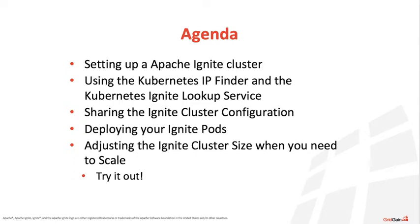Sharing the configuration is necessary in order for Kubernetes and Ignite to understand each other. Then we'll get into the fun stuff of actually deploying the Ignite pods — which are now technically Ignite pods in Kubernetes lingo, basically analogous to a node. The last thing, which is really the meat of utilizing Kubernetes and Ignite together, is the ability to elastically scale — either scale up or scale down your cluster as needed. This is very good for use cases where your business might grow during a holiday season, and in the cloud you can easily elastically scale out using Kubernetes.